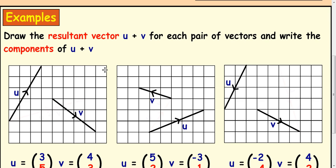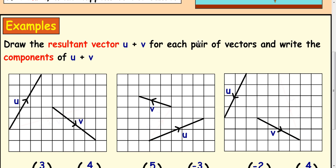So here's some examples. Draw the resultant vector u plus v for each pair of vectors and write the components of u plus v. If you want to draw these out, you draw them nose to tail, join them up and then you get your resultant vector.